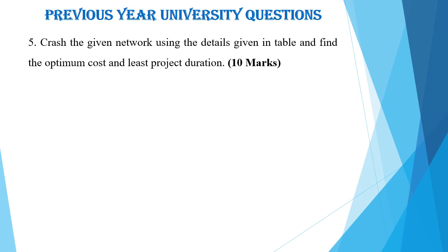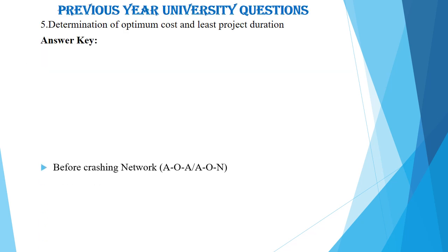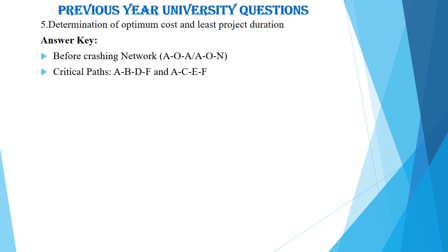The next question is also a numerical problem: crash the given network using the details given in the table and find the optimum and least project duration, asked for 10 marks. The data includes activity and predecessor relationship, normal and crash duration, and normal and crash cost. The first step is to draw the network, then estimate the total duration and cost slopes before crashing. It is very important to estimate the cost slope, as crashing depends on it. There are two critical paths for this particular network: ABDF and ACEF.